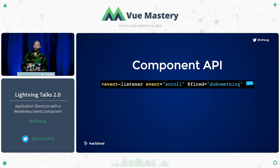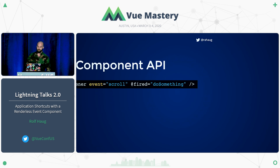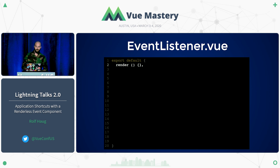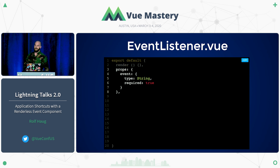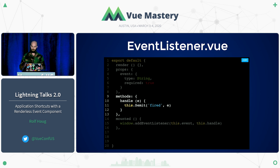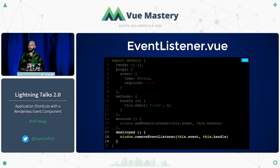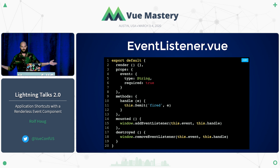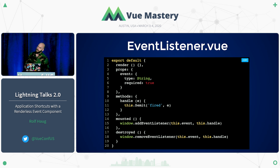I want to create a component that has an API like this — we give it an event, and once that event is fired, we invoke a method. We start off by making it renderless by giving it a render function. We need a prop to receive the event — it's a string and it's required. In the mounted lifecycle hook, I will register the event. We need a handle method responsible for notifying the parent that this event happened. And in the destroyed lifecycle hook, we remove the event listener we just added. With these 20 lines of code, we can very easily react to events and make application shortcuts.